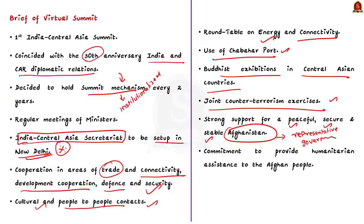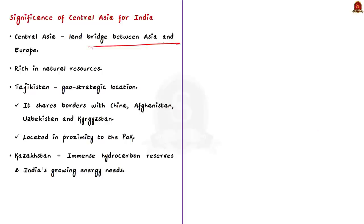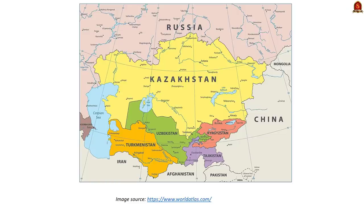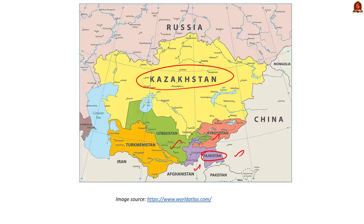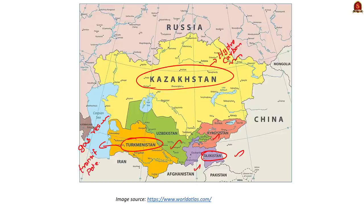Central Asia serves as a land bridge between Asia and Europe and is very rich in natural resources, making it geopolitically significant and economically offering wide opportunities. Tajikistan's importance for India lies in its geostrategic location — it shares borders with China, Afghanistan, Uzbekistan, and Kyrgyzstan, and is located in proximity to Pakistan-occupied Kashmir. Kazakhstan's importance needs to be viewed in the context of India's growing energy needs and Kazakhstan's immense hydrocarbon resources. Turkmenistan's importance lies in its enormous gas resources, transit potential, and geostrategic location.